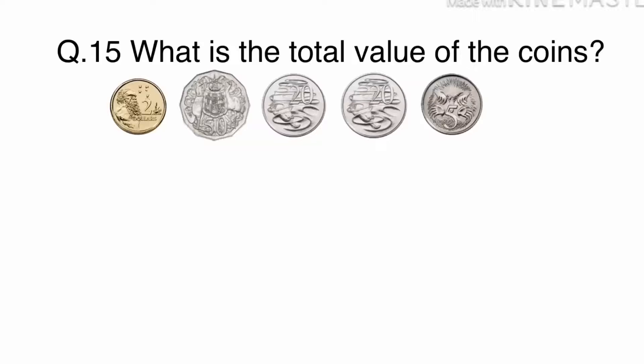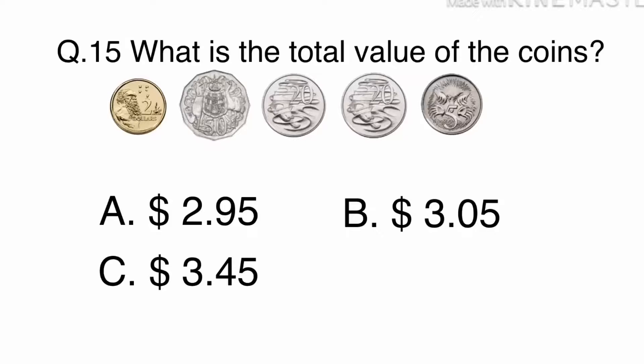Question 15. What is the total value of the coins? A. $2.95, B. $3.05, C. $3.45, or D. $3.95?